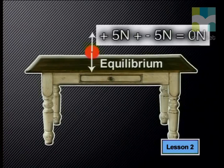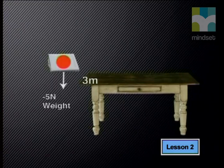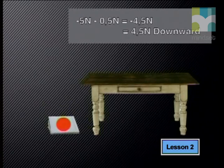Notice that neither the shape nor the motion of the book changes as a result of these forces — we say the forces acting on the book are in equilibrium. However, if the book were to fall from a height of 3 meters, there would be the same downward force of 5 Newtons (its weight), but a smaller upward force of about half a Newton due to air resistance. There is now a resultant force of 4.5 Newtons downward, which causes the book to accelerate downward towards the floor. In this lesson, we will focus on situations where the resultant force acting on a body is 0 Newtons.